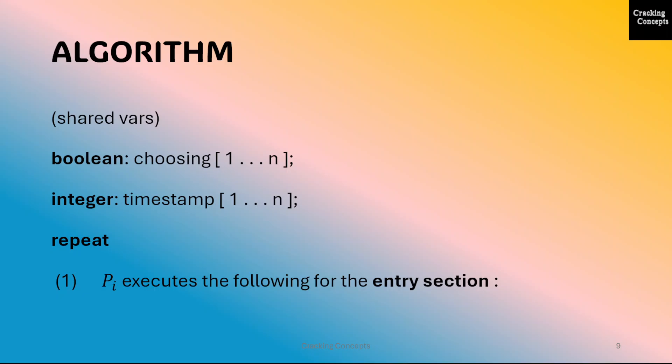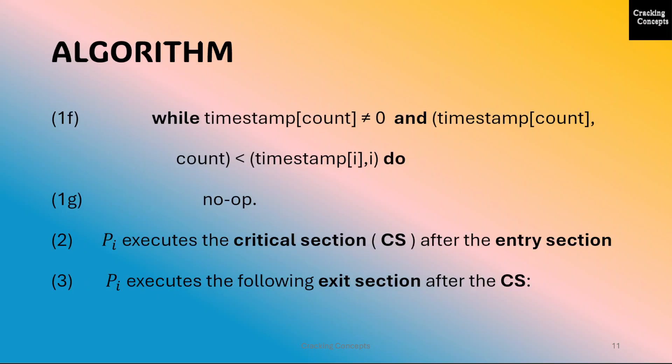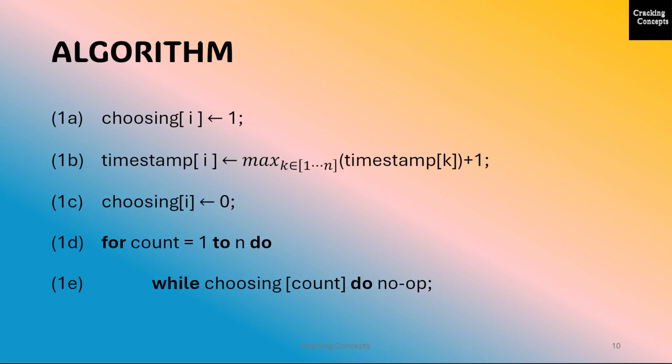Now we will have a look at the algorithm. There are two major variables: one is a boolean variable called choosing, whose value will be either true or false for each process; and the other is an integer variable which is the timestamp of processes. The code following this statement will be the code for the entry section. In the entry section, a process chooses a timestamp for itself and resets it to 0 in the exit section. In lines 1a to 1c, each process chooses a timestamp for itself as the maximum of the latest timestamps of all processes plus 1. These steps are non-atomic.